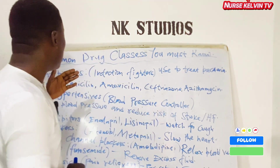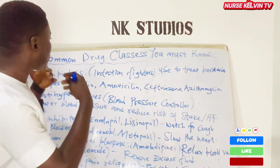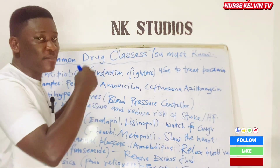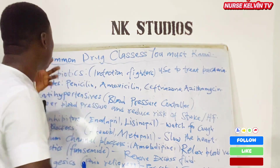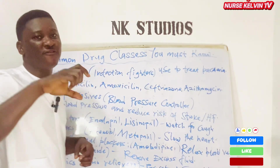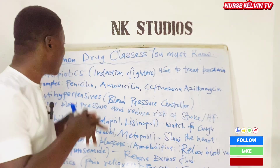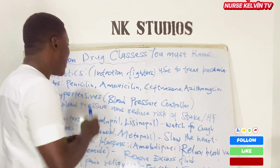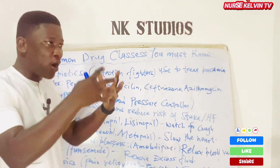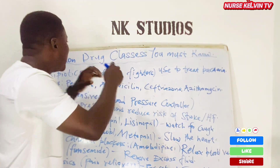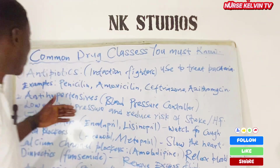The first one we are going to talk about is antibiotics. Antibiotics are medications that are used to fight bacteria. This class of medication is used to fight bacteria, so they are known as the infection fighters. Examples include penicillin, amoxicillin, ceftriaxone, and azithromycin. These are all under the antibiotic class of drugs.